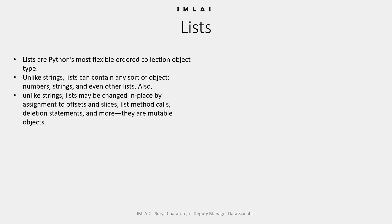Unlike strings, lists are mutable. What does mutable mean? Mutable means the object can be changed in place by assignment to offsets and slices, list method calls, deletion statements, and more. We will see this practically while coding in 'lists in action'.